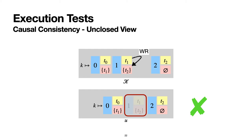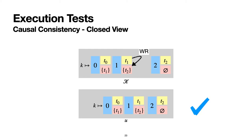The closure requires that if a view includes a version written by a transaction—for example T2—and there is another transaction related to T2—for example T1—then the view also needs to include all versions written by T1, specifically the second version. If the client includes the second version, we have a view closed with respect to session order union write-read, which corresponds to causal consistency.